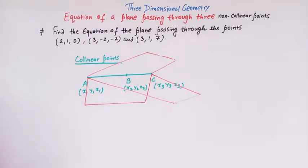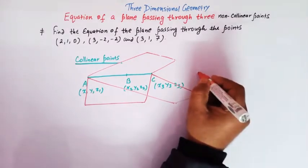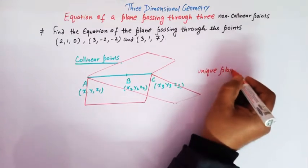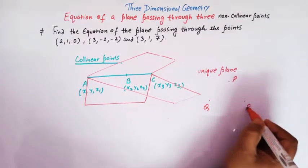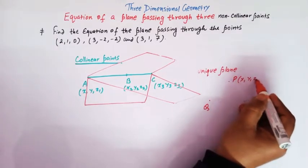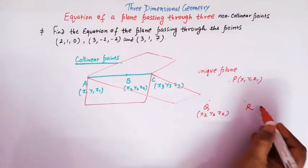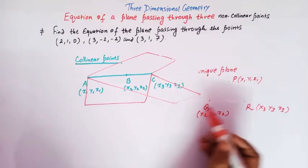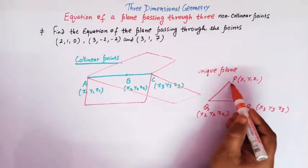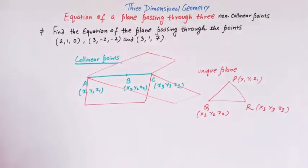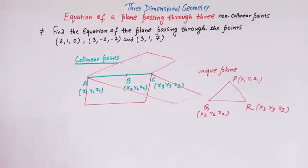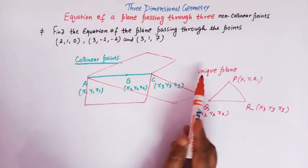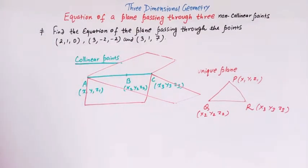But whenever we have three non-collinear points, we have a unique plane passing through those three points. Suppose we have points P, Q, and R with coordinates (x1, y1, z1), (x2, y2, z2), and (x3, y3, z3). In that case we will have a unique plane passing through these three non-collinear points. Here in this problem we have to find the equation of that unique plane.